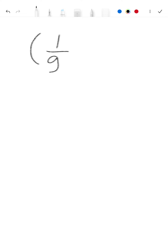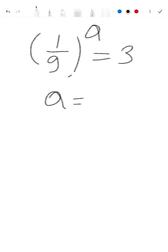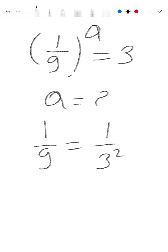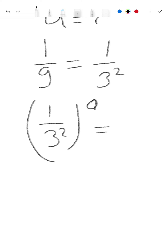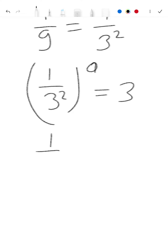In this video we find the value of a, given (1/9)^a = 3. We write 1/9 as 1/3², so the equation becomes (1/3²)^a = 3, which we can write as (1/3²)^a = 3^(1/a).